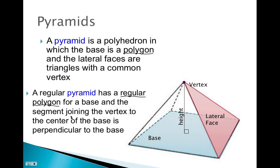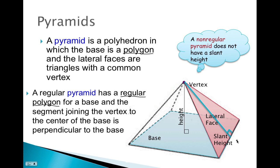The segment joining the vertex to the center of the base is perpendicular to the base — this is called the slant height. If we draw a line from the vertex to the center of one of the sides of the base, it will be perpendicular there, and it is a diagonal line on the lateral face. Note that a non-regular pyramid does not have a slant height; only a regular pyramid has a slant height.